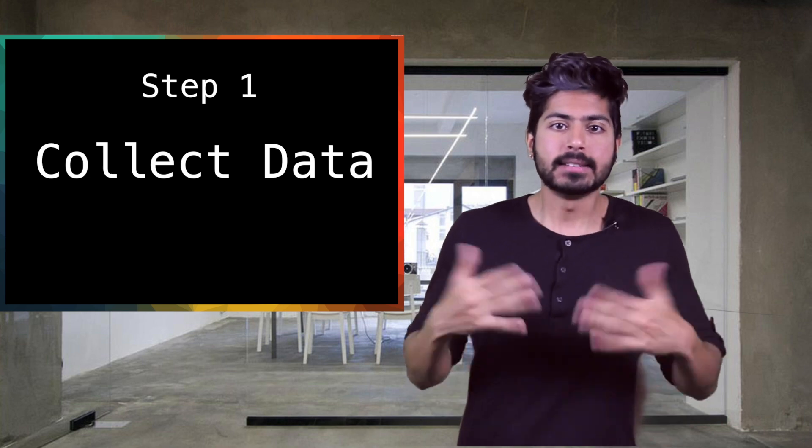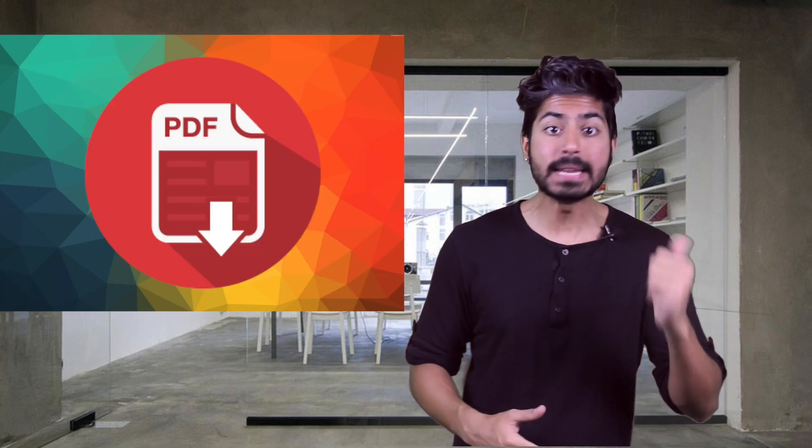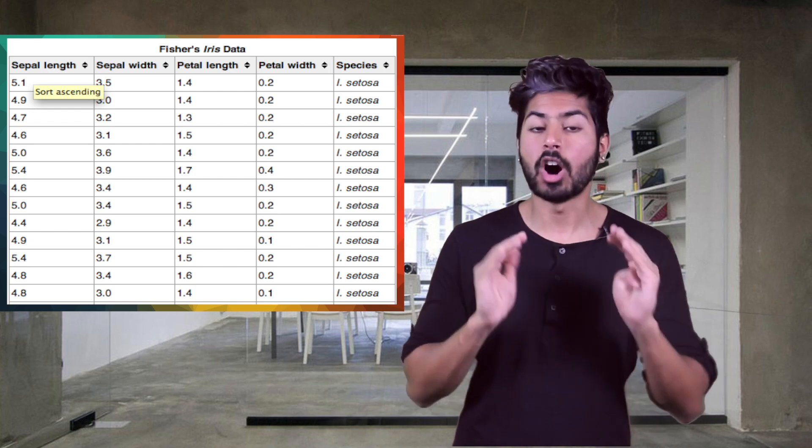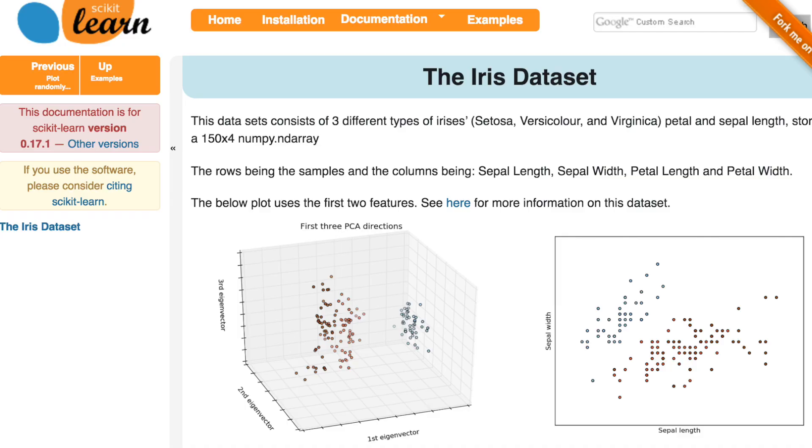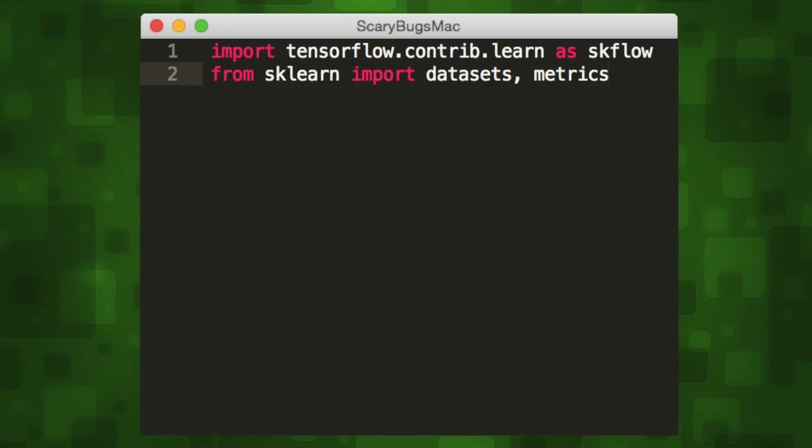The first step is to get our data. Datasets come in all different kinds of formats. PDFs, CSVs, holograms. It doesn't matter the format. We can easily parse it in our code to get the relevant details. We'll be using a well-known dataset that contains 150 samples of iris flowers. Luckily for us, this dataset comes preloaded with scikit-learn. So we can just load it here.